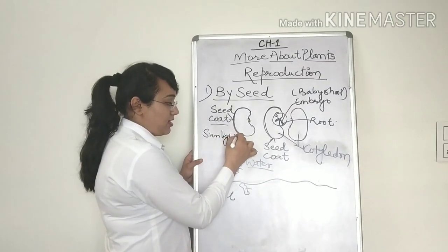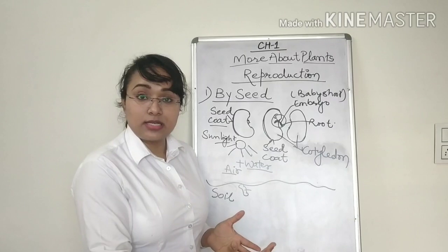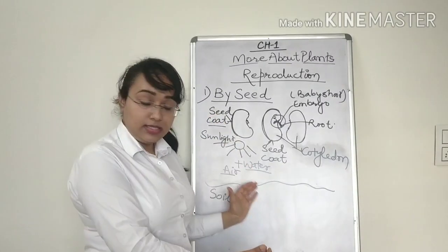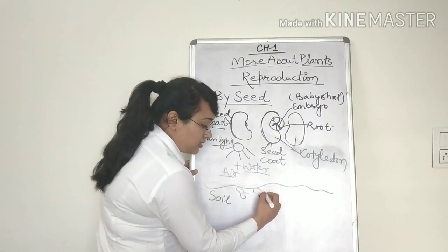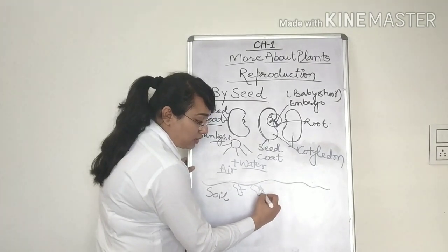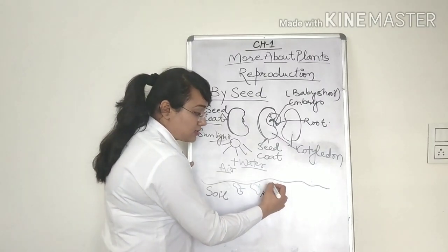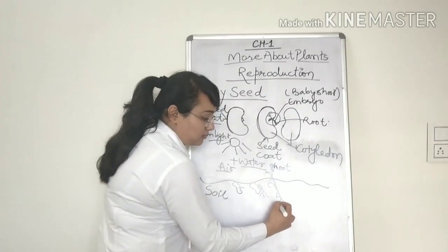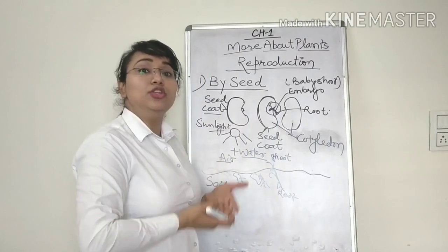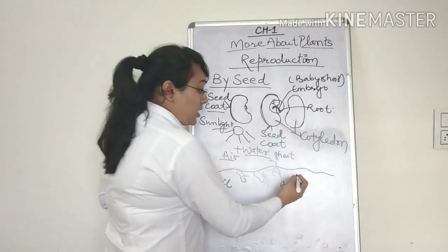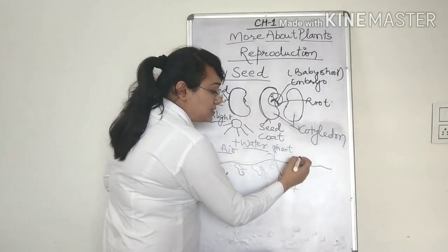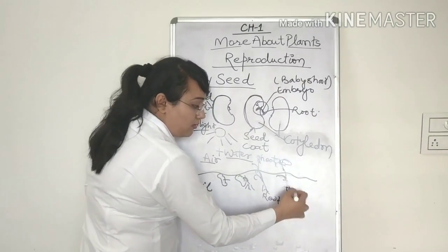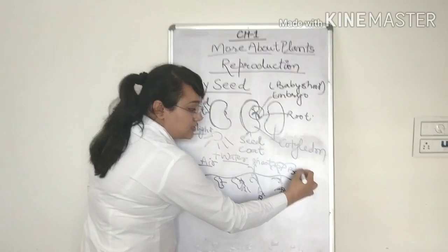Now when a seed is grown and given water, air and sunlight, after some days, the root part grows downwards and the shoot part starts coming outwards. This is a shoot part of the baby and the root grows downwards and takes the nutrients from the soil. Now after some days, we can see that the baby plant comes out and the leaves are grown. So this is a baby plant.